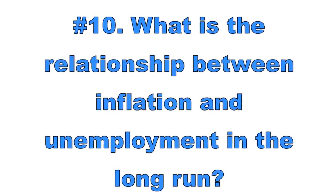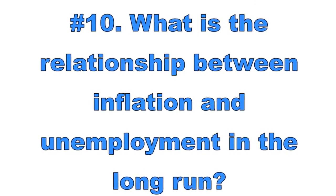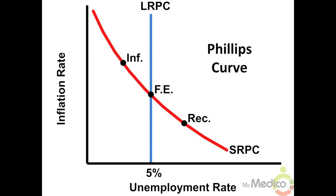Number ten: what is the relationship between inflation and unemployment in the long run? In the long run, there is no trade-off between inflation and unemployment. The economy always returns to full employment, represented by the long-run Phillips curve — a vertical line at the economy's natural rate of unemployment. If the economy is operating to the right of the long-run Phillips curve, it has a recessionary gap with high unemployment. If it is operating to the left, there is an inflationary gap with high inflation.